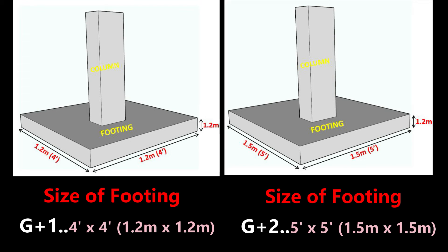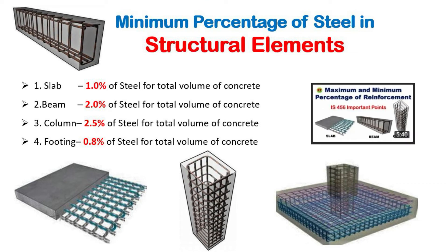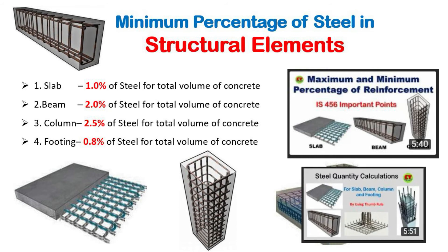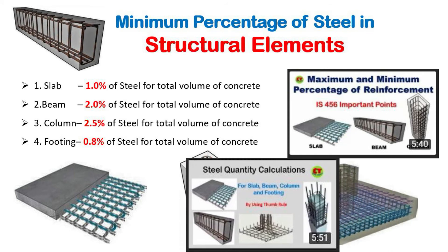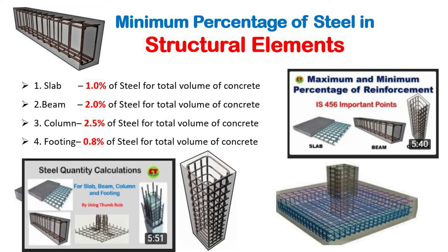Next, the minimum percentage of steel to be used in structural elements: for slab, 1% of steel for total volume of concrete; for beam, 2% of steel for total volume of concrete; for column, 2.5% of steel of total volume of concrete; and for footing, 0.8% of steel for total volume of concrete is considered as the minimum percentage of steel.